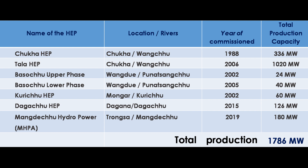The Tala hydropower plant is the biggest hydropower plant in the country. It is also located on the Wangchu River, was commissioned in 2006, with a total production capacity of 1,020 megawatts. This is followed by Basachu lower phase on the Punachanchu River, commissioned in 2005 with 40 megawatts, and Basachu upper phase with 24 megawatts.